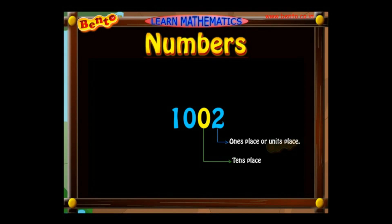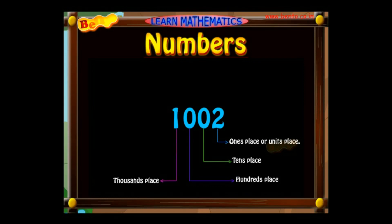The number 1002 has one in its thousands place. It tells us the number has one thousand, zero hundreds, zero tens, and two units. It has a thousand and a two in it, so it is read as one thousand and two.